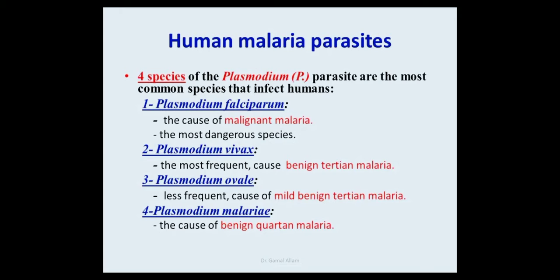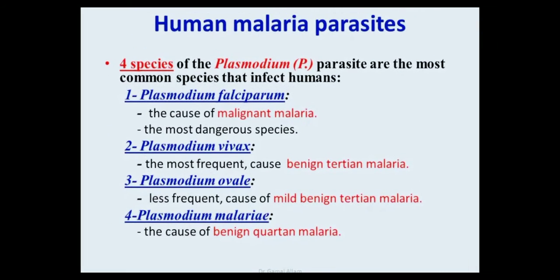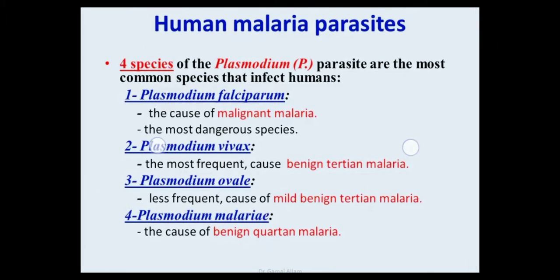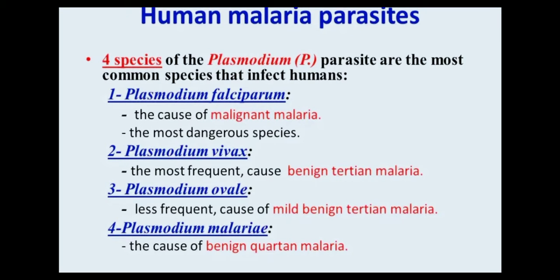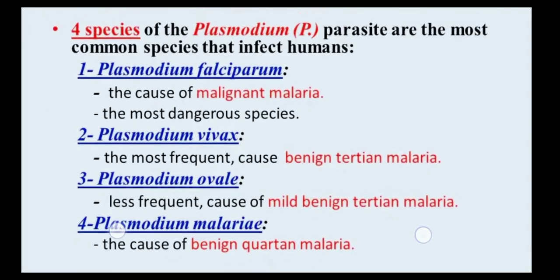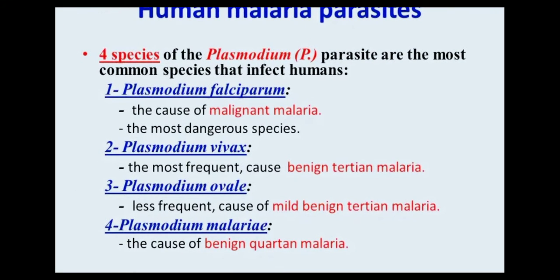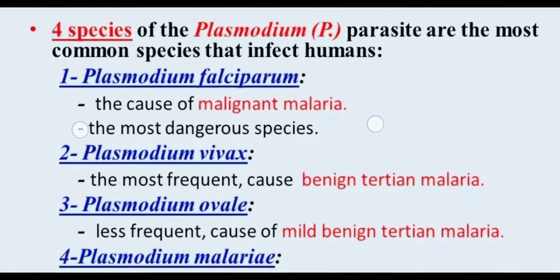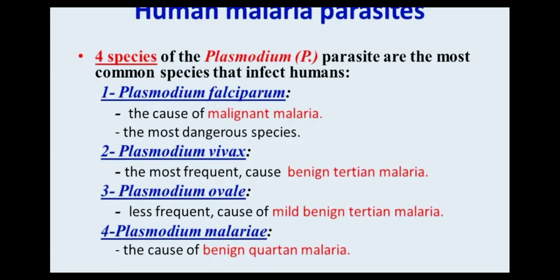There are four species of Plasmodium infectious to humans: Plasmodium falciparum, Plasmodium vivax, Plasmodium ovale, and Plasmodium malariae. Falciparum causes malignant malaria, vivax causes benign tertian malaria, ovale causes mild benign tertian malaria, and malariae causes benign quartan malaria. The most dangerous species is Plasmodium falciparum.